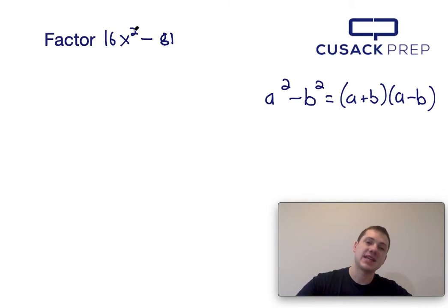Since 16x squared is the first number, we can think of that as a squared, and since 81 is the second number, we can think of that as b squared.